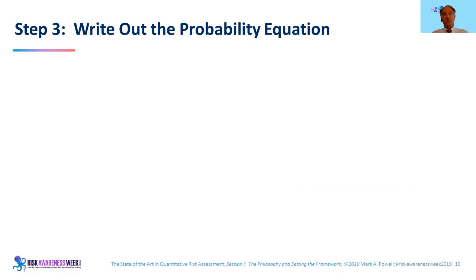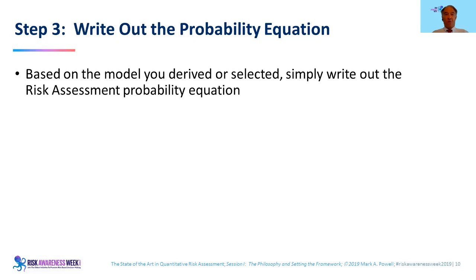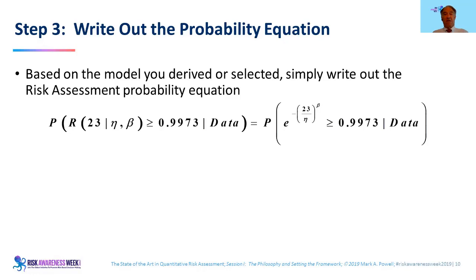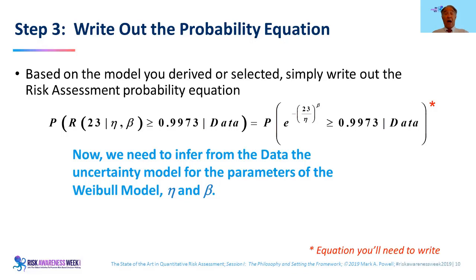Step three: write out the probability equation — formulate the integral. Based on the Weibull model, we write out the risk assessment: the probability that the reliability at 23 seconds, given uncertain quantities eta and beta, is greater than 99.73%, given our data of failures and survivors. The reliability given eta and beta is simply that exponential on the right side of the equation — that's the Weibull model. This is an equation you'll need to write, but it should be straightforward for your specific problem.